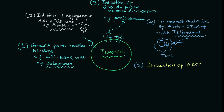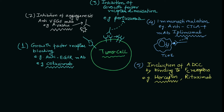The fifth mechanism of action is the induction of ADCC — antibody-dependent cell-mediated cytotoxicity — via which it can target the tumor cell. This works by binding to the Fc receptor on the surface of the cell. Examples are herceptin (trastuzumab) and rituximab. Remember these names — they are really important for various competitive exams.